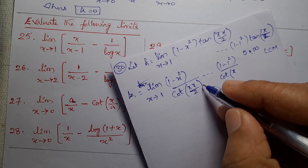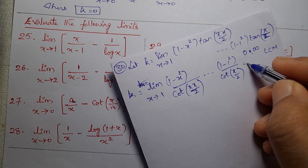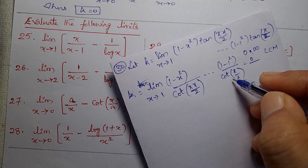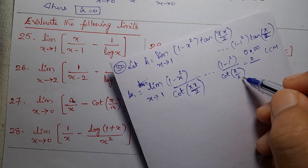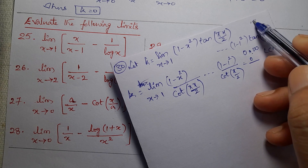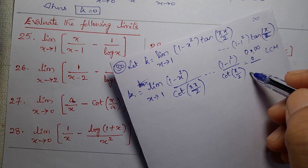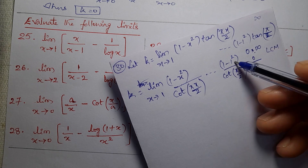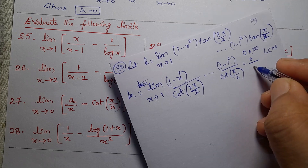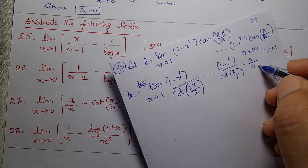Now, πx/2 into 1 is π/2. So 1 minus 1 squared is 0, divided by π/2 — that is tan(90°). tan(90°) is infinity, so its reciprocal is cot, and the reciprocal of infinity is 0. So this becomes a 0/0 form.